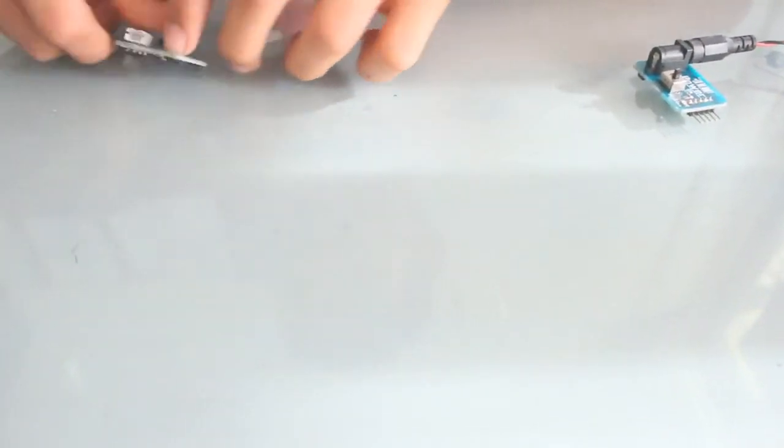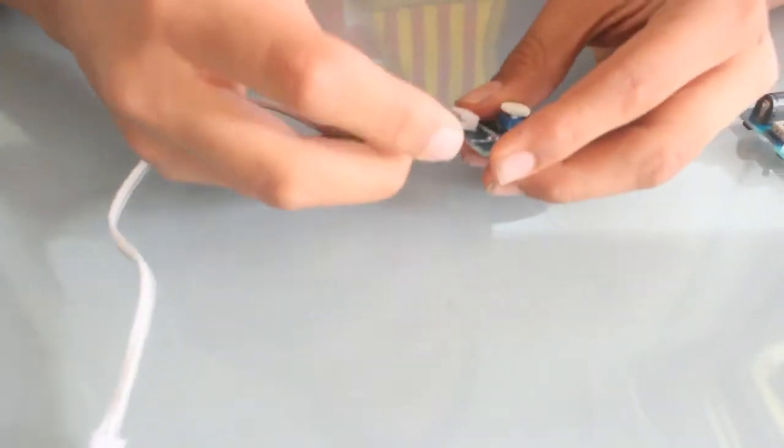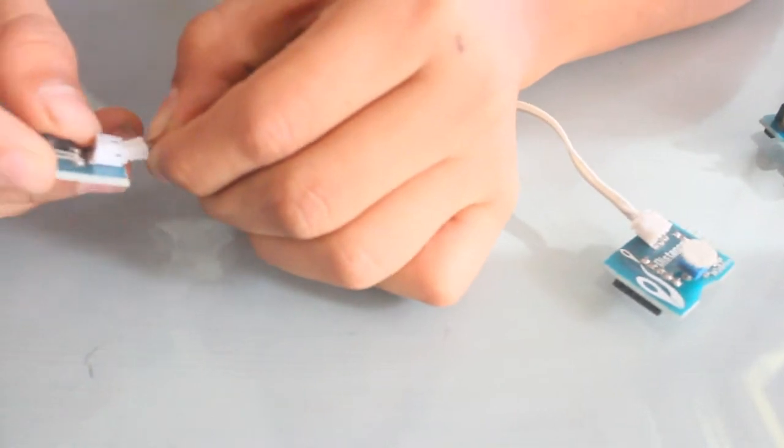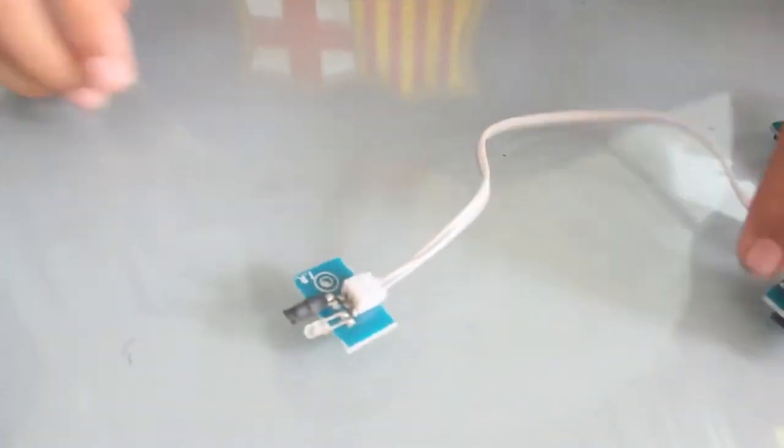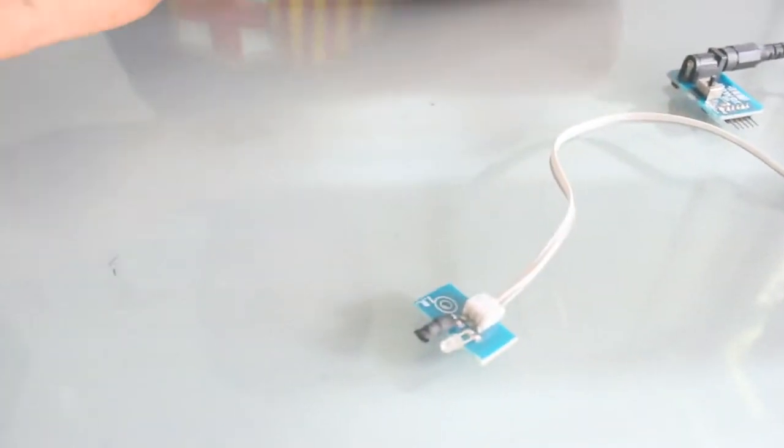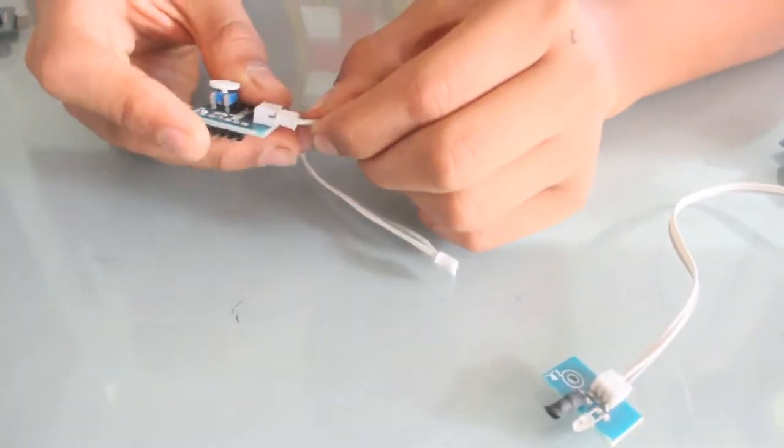Then take a distance sensor, attach this wire, attach this wire to the infrared module, and just keep this aside. Now take the another distance sensor.